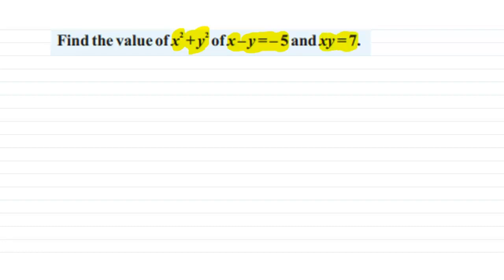Here we need to recollect all the identities we have learned till now. We have learned (a + b)² which is equal to a² + 2ab + b², and it can be rewritten as a² + b² + 2ab.